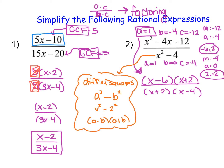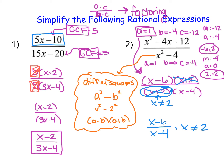Now we can simplify. Both the numerator and denominator contain a factor of x plus 2, so we cancel those out. The simplified expression is x minus 6 over x minus 4. However, because we canceled out a term containing x, we must note that x cannot equal 2, since that would make the original denominator equal zero even though it's no longer shown in the simplified form.